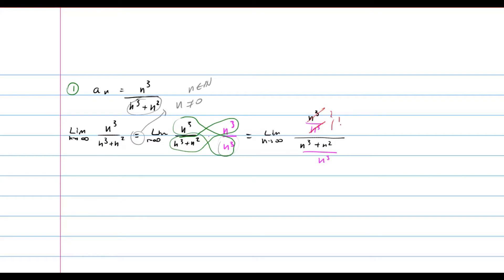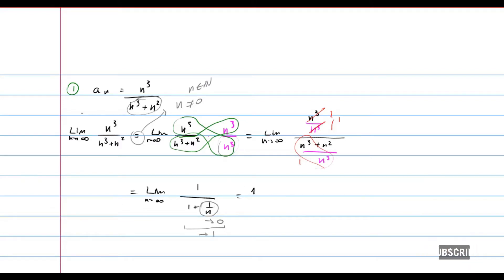After simplifying, we get the limit when n tends towards infinity of 1 over 1 plus 1 over n. We know from the theory videos that 1 over n tends to 0. So the denominator tends towards 1, and we have 1 over 1, which equals 1. That is the limit of the sequence.